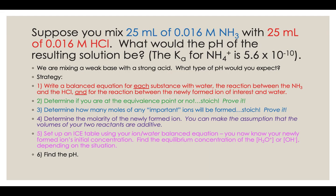The previous slides talked conceptually about the reaction between ammonia and hydrochloric acid and how it would be acidic when you titrate a strong acid with a weak base, but didn't go through the math. Here is our first example of how you would calculate the pH of the resulting solution, with more specifics.